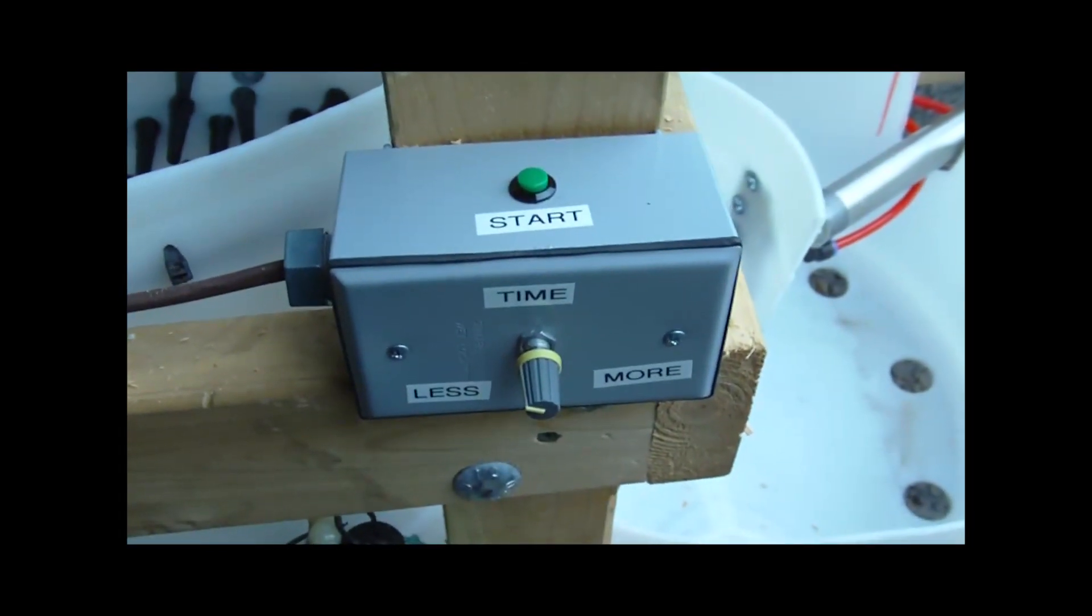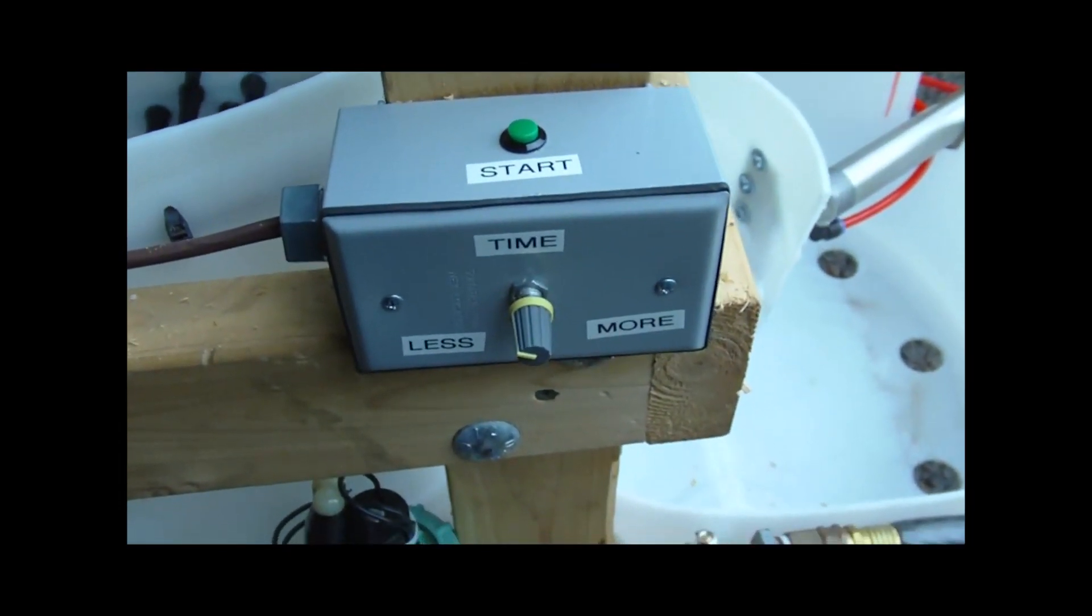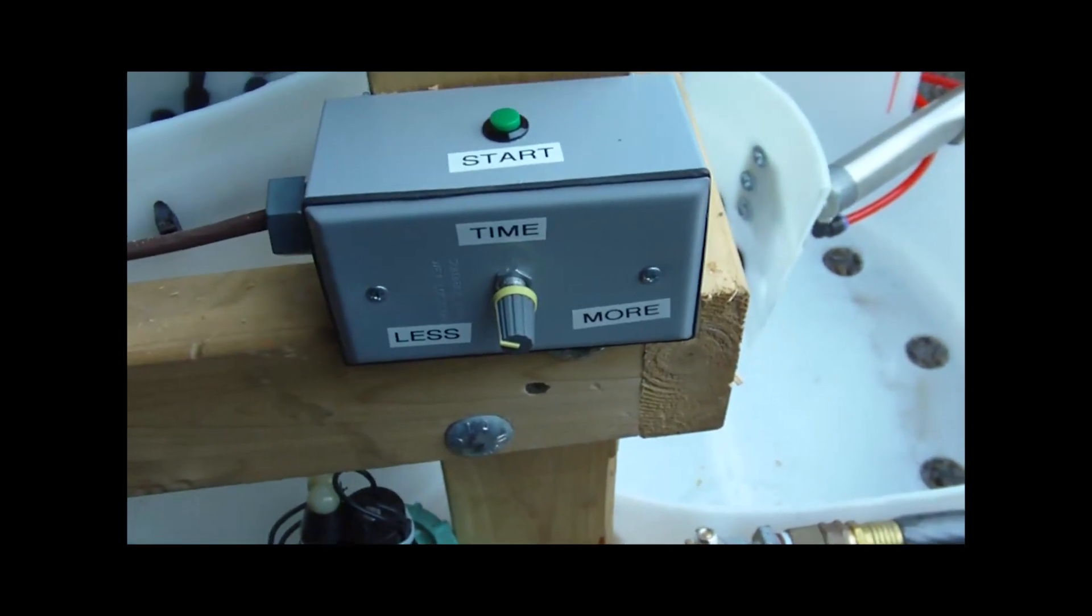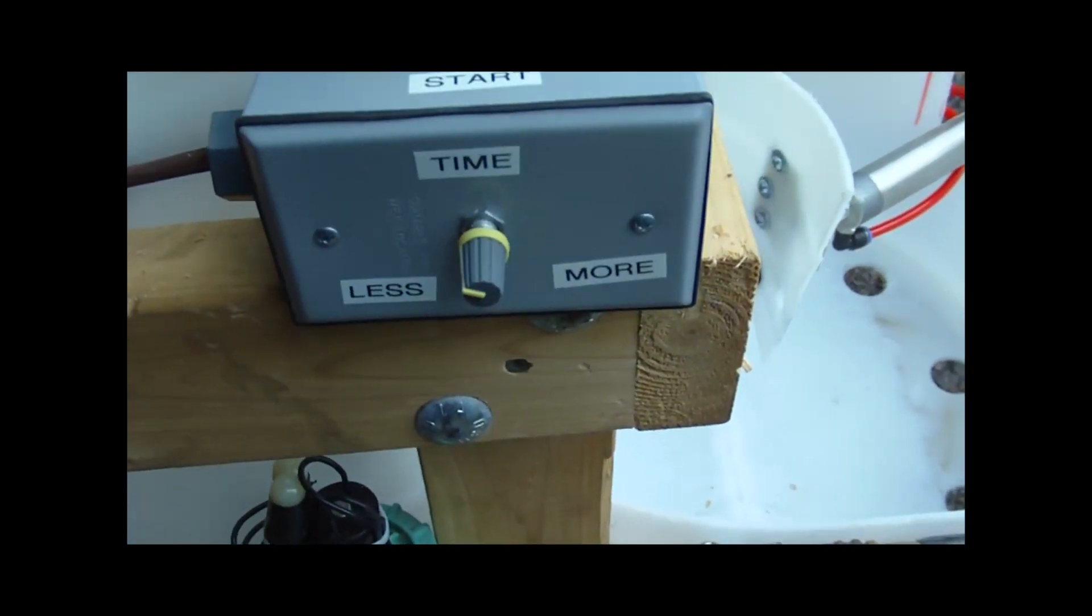The only control for the chicken plucker is a start button and a timer knob. You can have less time or more time.